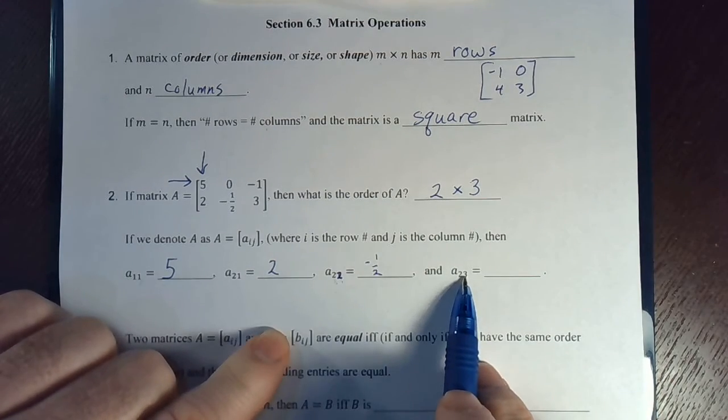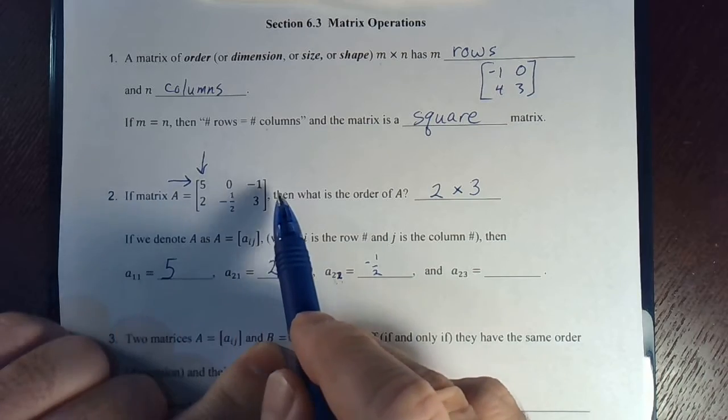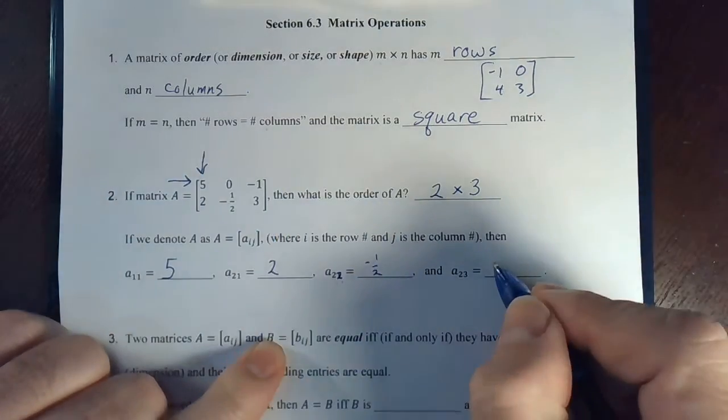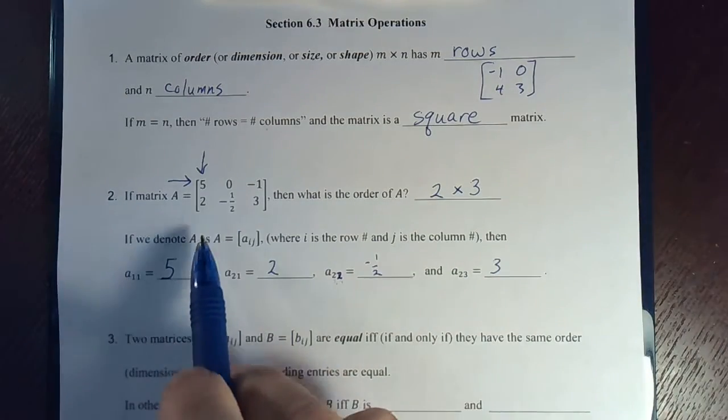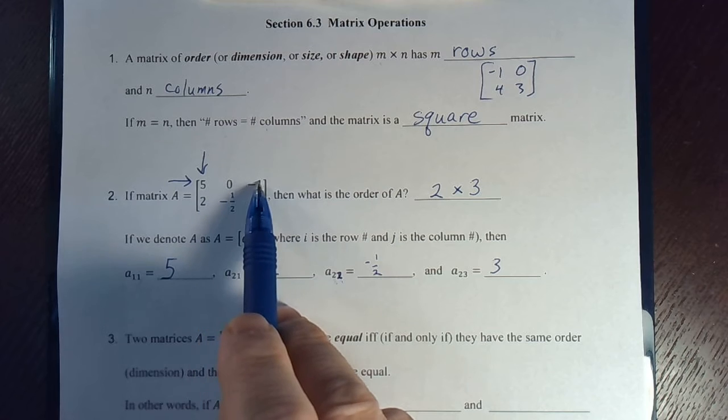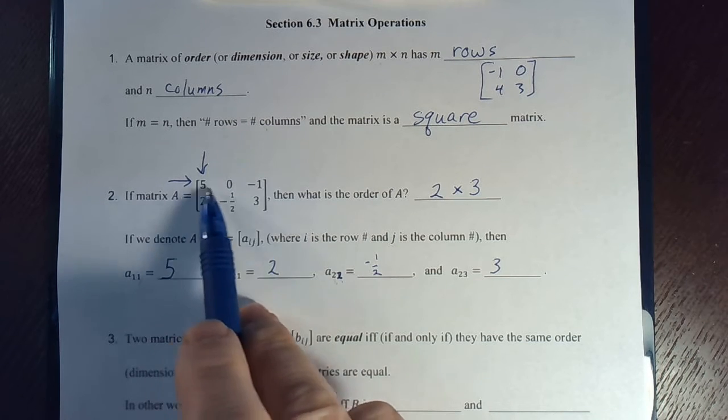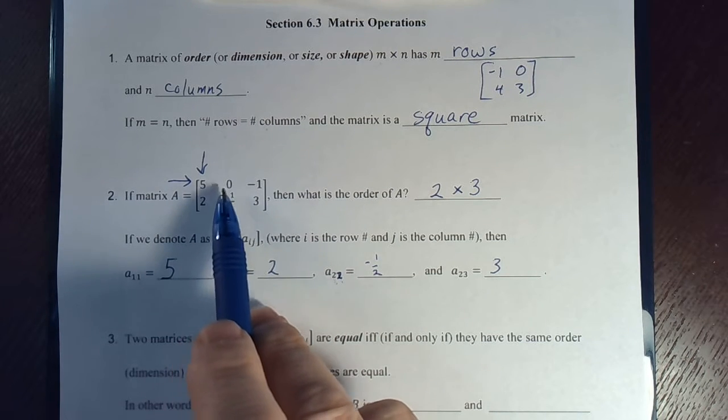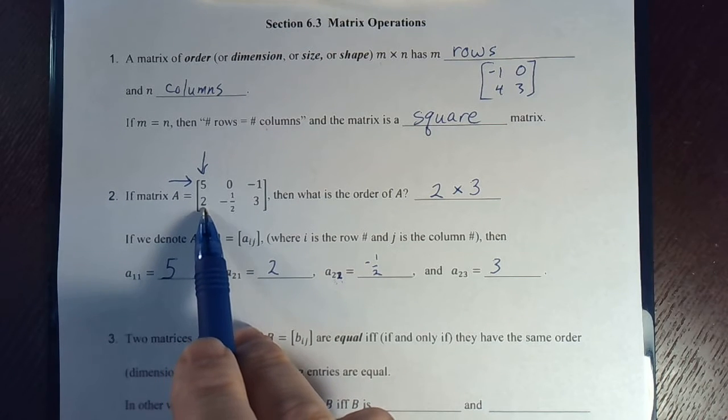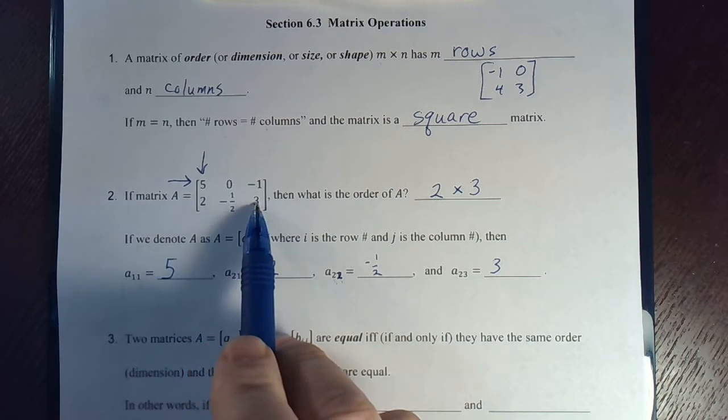And then A two three would be row two, bottom row, and the last column, column three. That would be the element three. So, go through them really quickly. This is A one one, A one two, A one three. Row number one. A one one, A one two, A one three. Now, we go down to the second row. A two one, A two two, A two three.